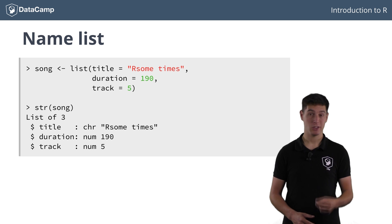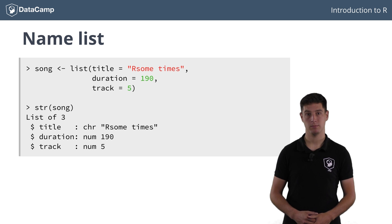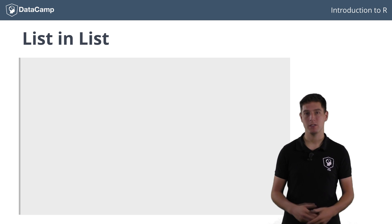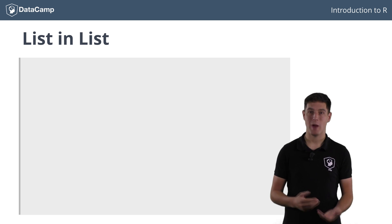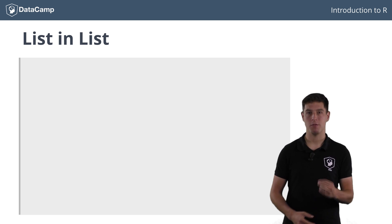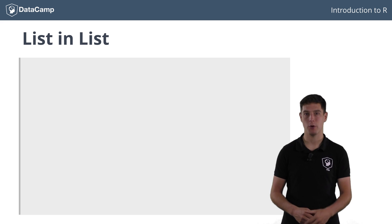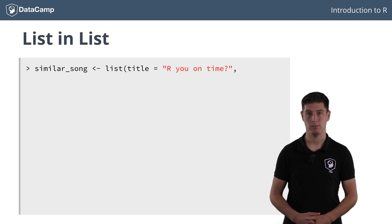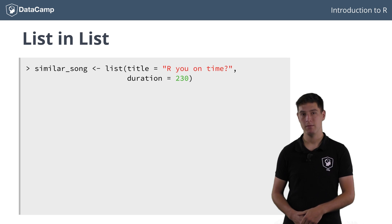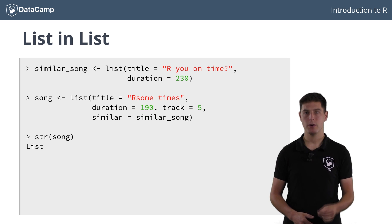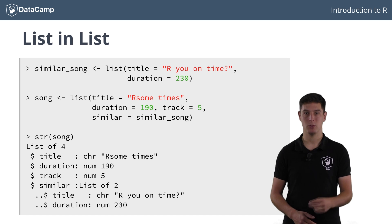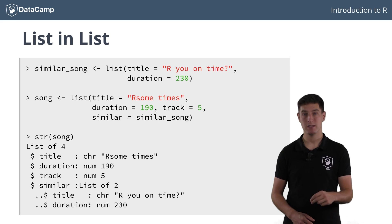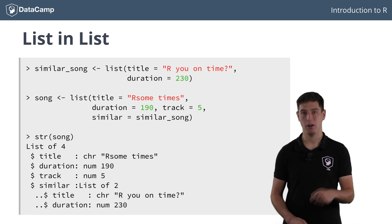The str() function compactly displays the structure of the song list. As I told you before, lists can contain practically anything — they can even contain other lists. Suppose you want to add a list containing the title and duration of a very similar but less catchy song you've also recorded. Let's first create a list containing this information, called similar_song. We can now create the song list again, and the structure of this list reveals that it is perfectly possible to store lists inside lists.